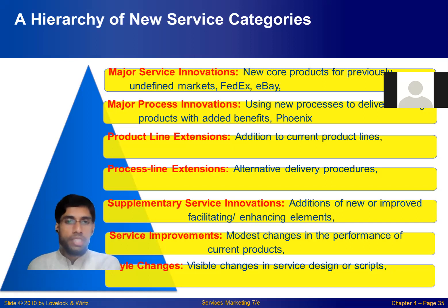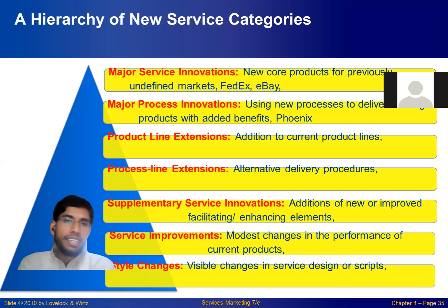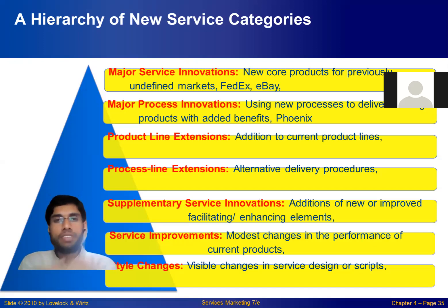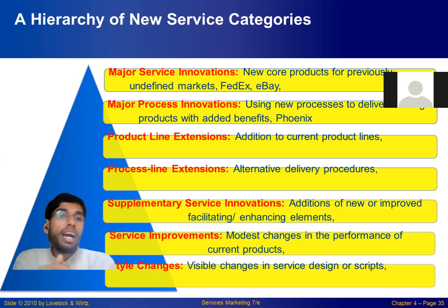Number 6 is major process innovation. Process innovation means using a new process to deliver an existing product. The key service remains the same, but they use an innovative system. For example, the university online class delivery is a process line innovation.